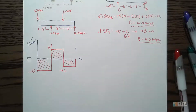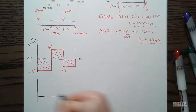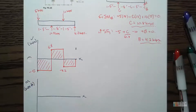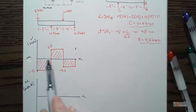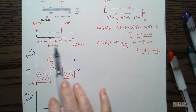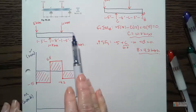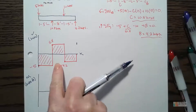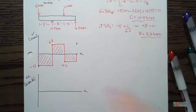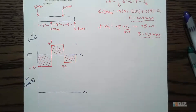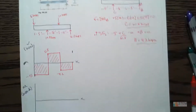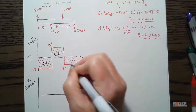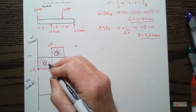Now let's do the moment diagram — units will be kip-feet. For the moment diagram we mainly focus on the shear diagram, but we also check for any applied couple moments. We only have forces applied here, so we'll focus on the shear diagram. To get the moment we look for the areas under or above the shear curve.